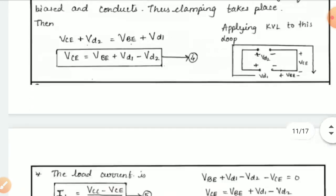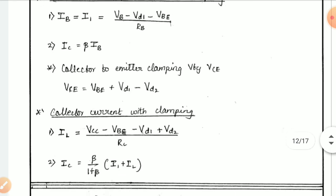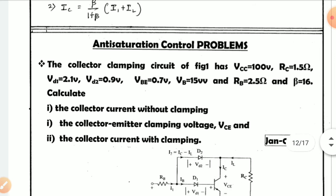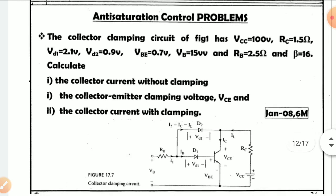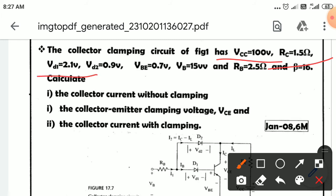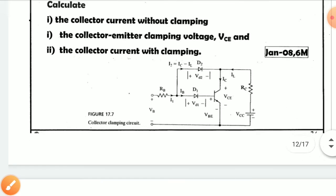For anti-saturation control, the key formulas to remember are: Ib = (Vb − Vd1 − Vbe) / Rb, Ic = β·Ib, Vce = Vbe + Vd1 − Vd2, and the collector current with clamping Ic = [β/(1+β)] × (I1 + IL). Now we will solve a problem: given Vcc = 100V, Rc = 1.5Ω, Vd1 = 2.1V, Vb = 15V, Rb = 0.5Ω, β = 16, calculate collector current without clamping, VCE clamping voltage, and collector current with clamping.